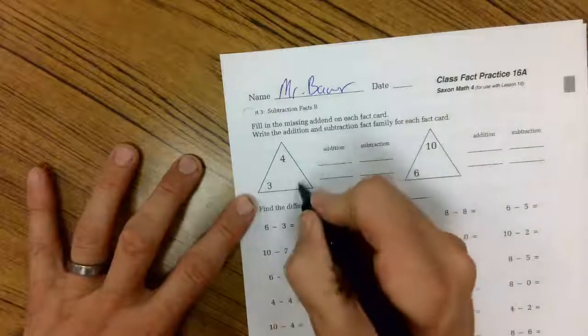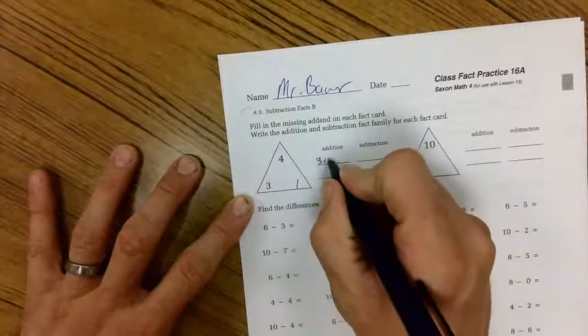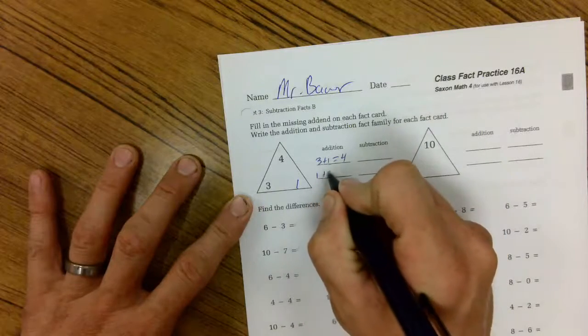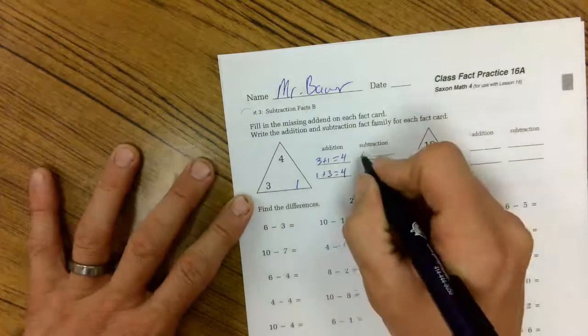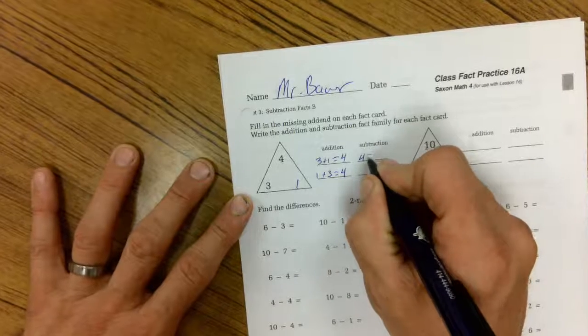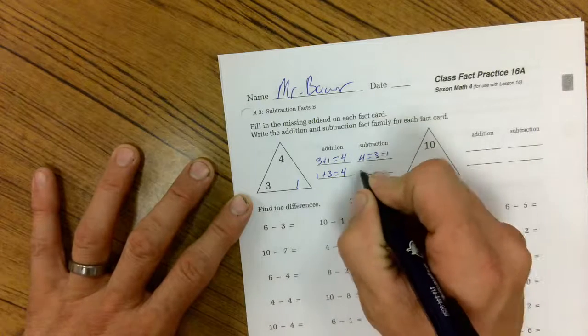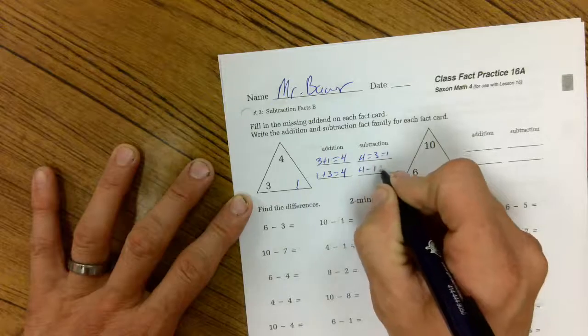4 minus 3 is 1. 3 plus 1 equals 4. 1 plus 3 equals 4. Subtraction starts with the biggest. 4 minus 3 equals 1, and 4 minus 1 equals 3.